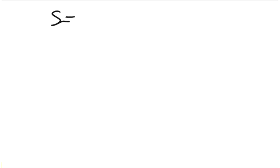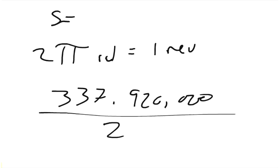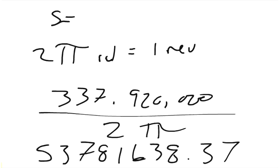So then it asks the question, how many revolutions of the tire are equivalent to your answer? If you remember, there are 2 pi radians, so 2 pi radians is equal to 1 revolution. And so if we already know that our radians is 337,920,000, then we can divide that answer by 2 pi. So 337,920,000 divided by 2 pi equals 53,781,638.37 revolutions.